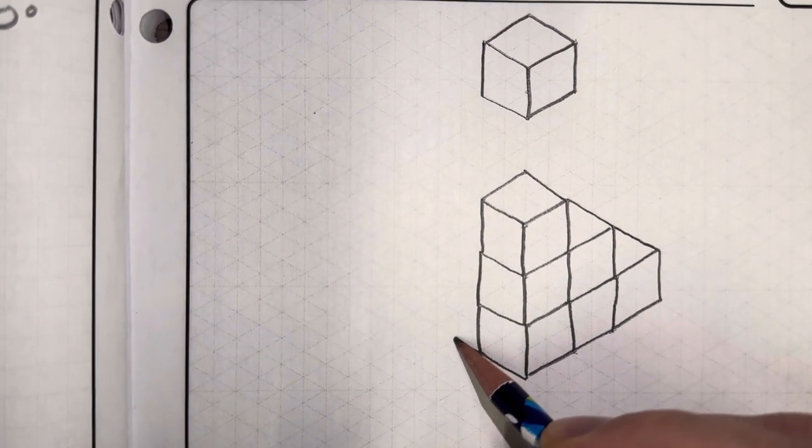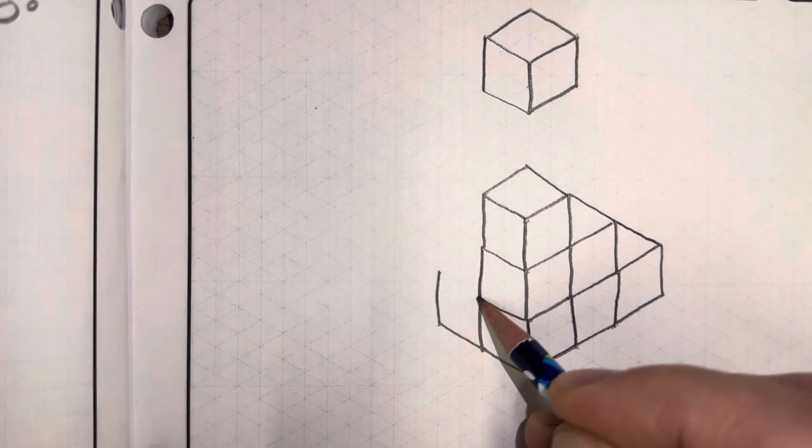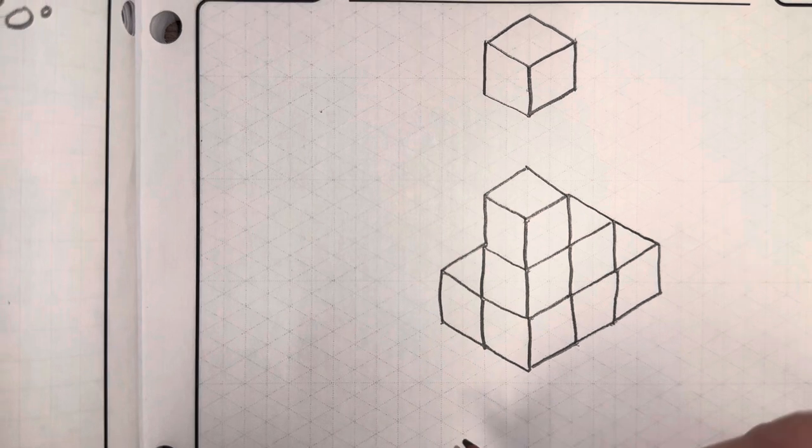Now, I can do the same thing going in the other direction. I'm going to go over two, up two. This time, I'm going to place that top on there.